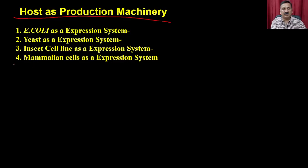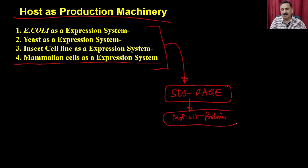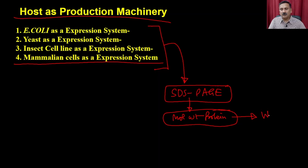This is all about the expression machinery for protein or enzyme production. We have discussed the E. coli expression system, yeast expression system, insect cell line expression system, and the mammalian expression system. Irrespective of the expression system, you can check overexpression on SDS-PAGE, but SDS-PAGE only tells you there is an overexpression of a particular molecular weight protein — it does not give you the identity of the protein. The identity is very important to confirm, and that is done using western blotting.